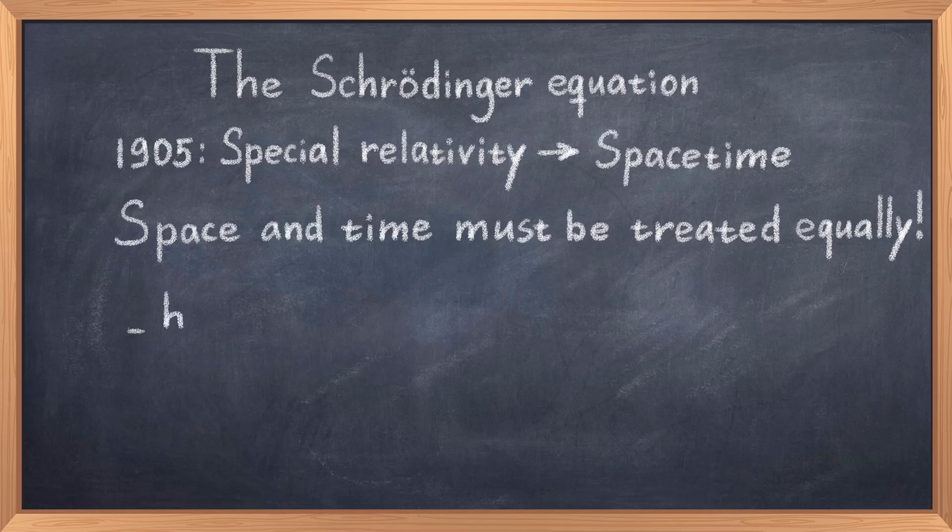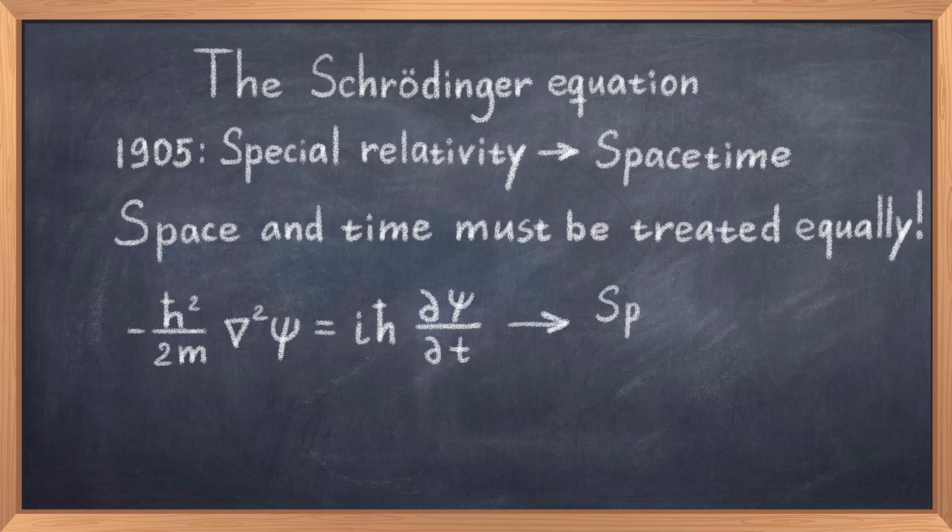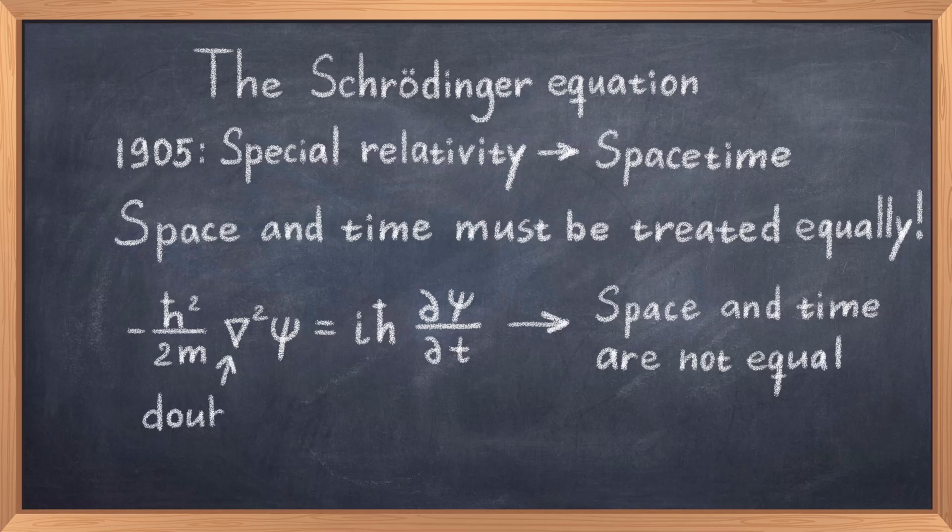If we look at the Schrödinger equation without any potential, thus that of a free particle, minus h-bar squared divided by 2m times the Laplacian of psi is equal to i h-bar and the derivative with respect to time. We see that on the left side we have the double derivative with respect to the spatial coordinates x, y, and z, which is indicated by the Nabla squared or the Laplacian.